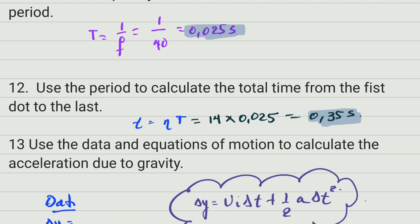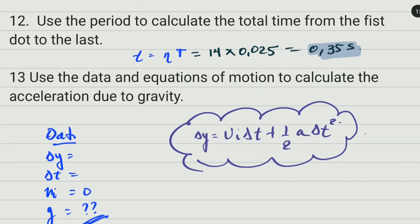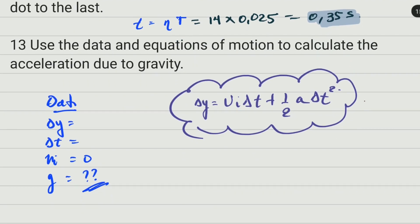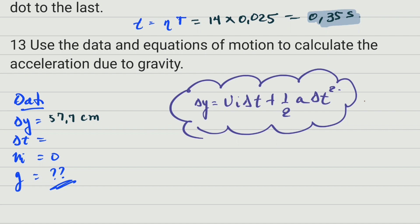Coming back to this formula we spoke about, the displacement was 57.7 centimeters, but you cannot work in centimeters, so it must be converted. That equals 0.577 meters. The time calculated is 0.35 seconds, and the initial velocity was zero.